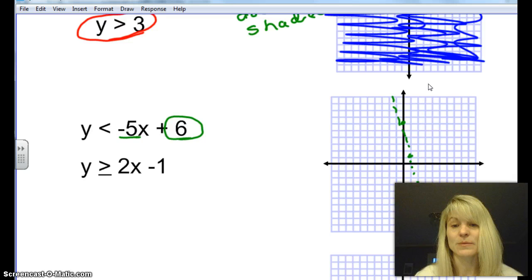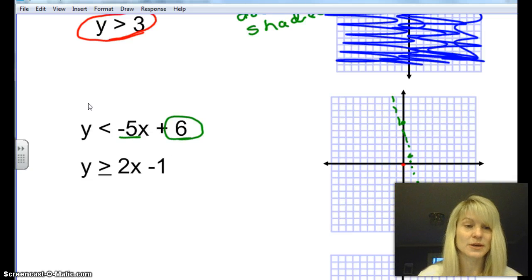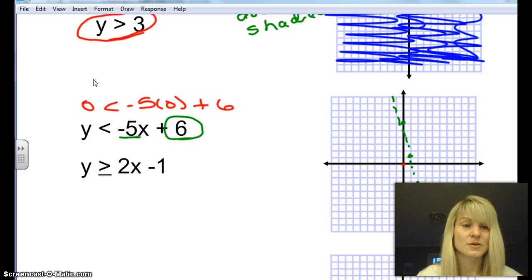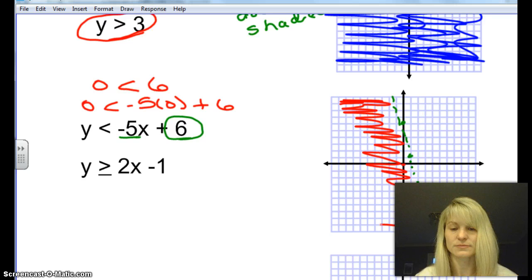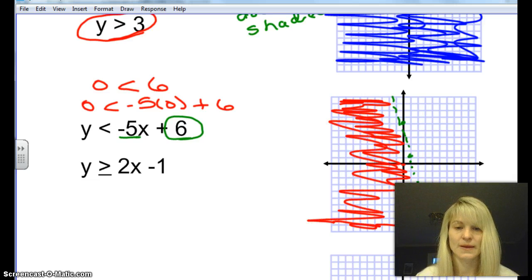And then I'm either going to shade the right side or the left side. So if you remember from previous lessons, we pick a test point. 0, 0 usually works pretty good. So we'll plug 0 in for y, 0 in for x. So here I'll get 0 is less than negative 5 times 0, 0 plus 6. So 0 is less than 6. That's a true statement. So we're going to shade this side that the test point was on.